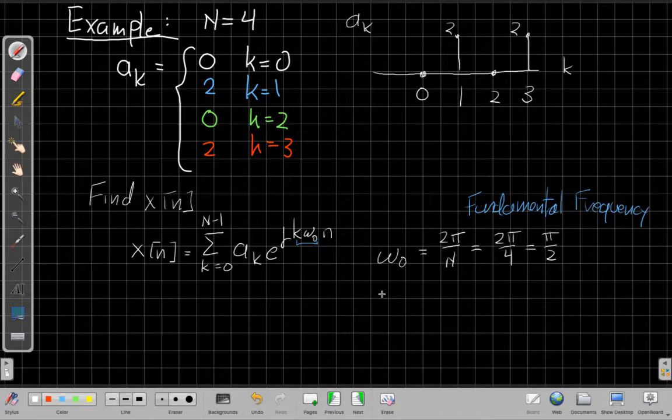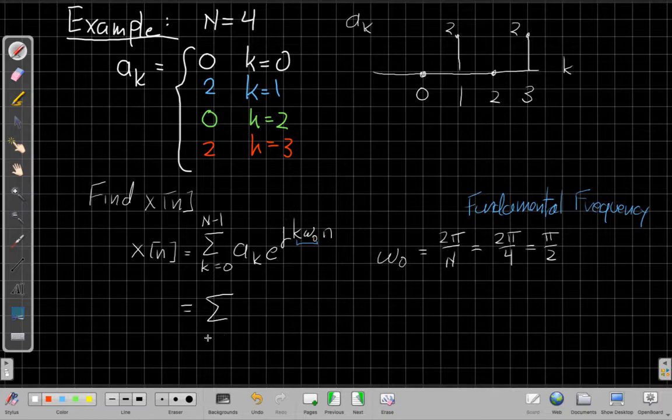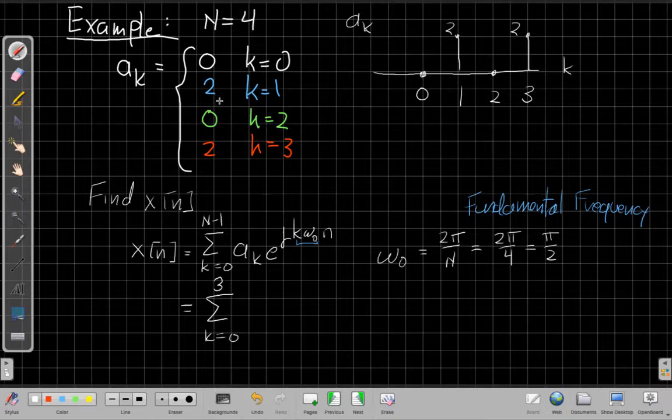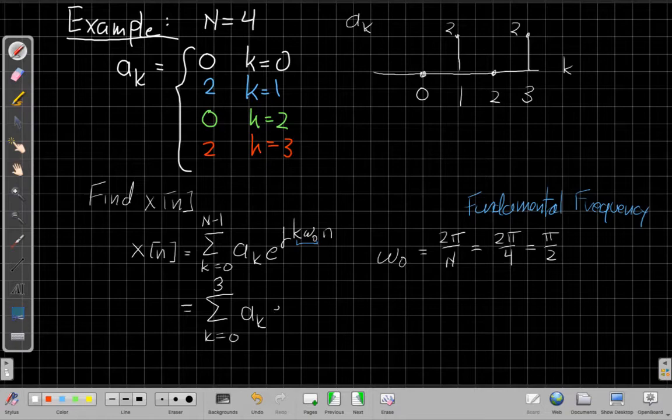And so we will eventually plug that in for omega 0, but pro tip from years of practice, sometimes it's good to wait until you get a few steps in to put omega 0 in because otherwise you end up copying pi over 2 over and over again. And then we need to plug in for the period as well.